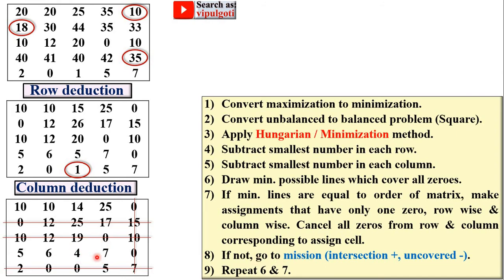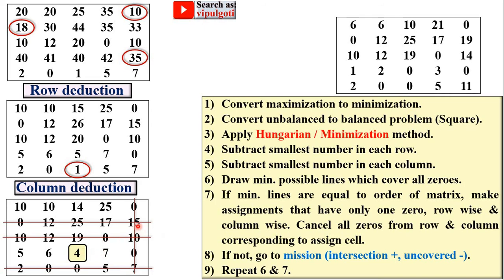Select the operator, which is the minimum value from the uncovered cells — here the operator is 4. Add this operator to the intersection points: 15 plus 4 equals 19, 10 plus 4 equals 14, and 7 plus 4 equals 11. For the uncovered cells, subtract 4 from each of those values. The remaining covered (non-intersection) values stay as they are, giving you the next matrix.